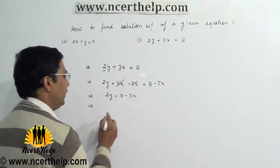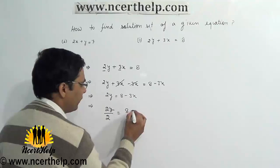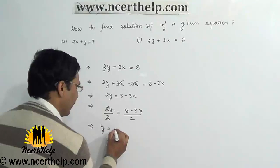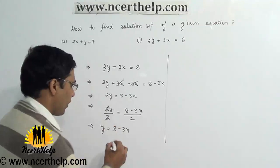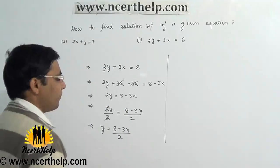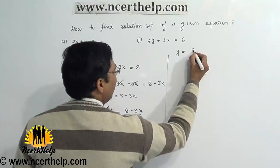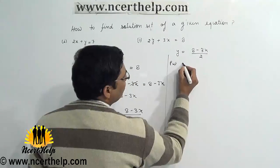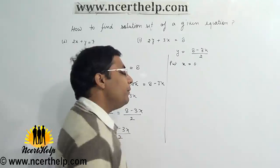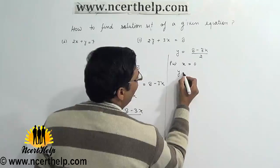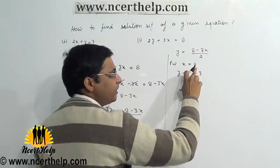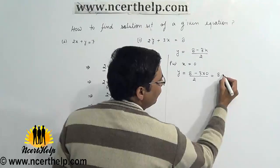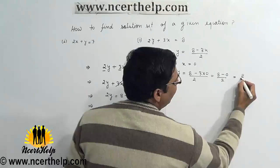We divide both sides by 2 to get the value of y. The 2 cancels out and we get y equals 8 minus 3x over 2. Reading this equation again: y equals (8 minus 3x) over 2. First, put x equals 0: y equals 8 minus 3 times 0, which is 8 over 2.